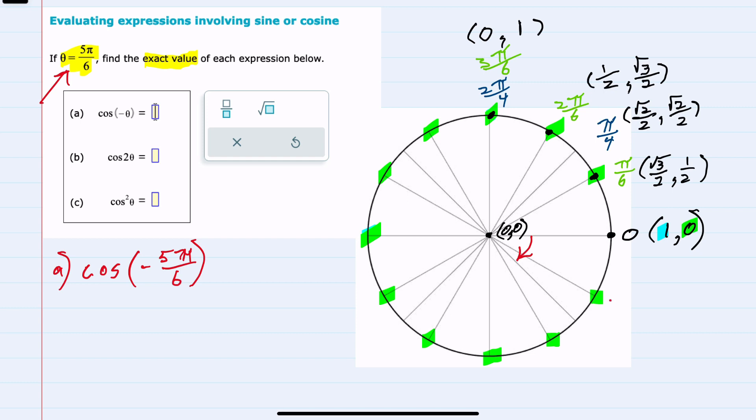The first one being negative 1π/6, then negative 2π/6, negative 3π/6, negative 4π/6, and negative 5π/6. So we have identified the angle. This is our negative 5π/6.